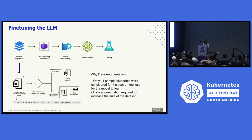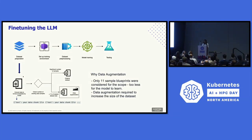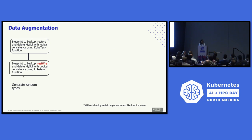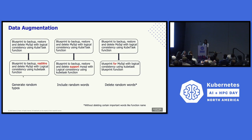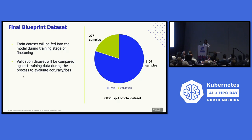Two important considerations while fine-tuning the model: first, what format should the data be in so the model can accept and understand it — for that, we look at the way the model itself was trained. Second, do we need data augmentation? This depends on the number of custom data samples we have. In my case, I only had 11 sample blueprints, which was far too few for the model to learn. So I proceeded with data augmentation to synthetically generate data — generating random typos, including random words, deleting random words. From 11 samples, we now had nearly 2,000 samples, split 80/20 to create a train and validation dataset.